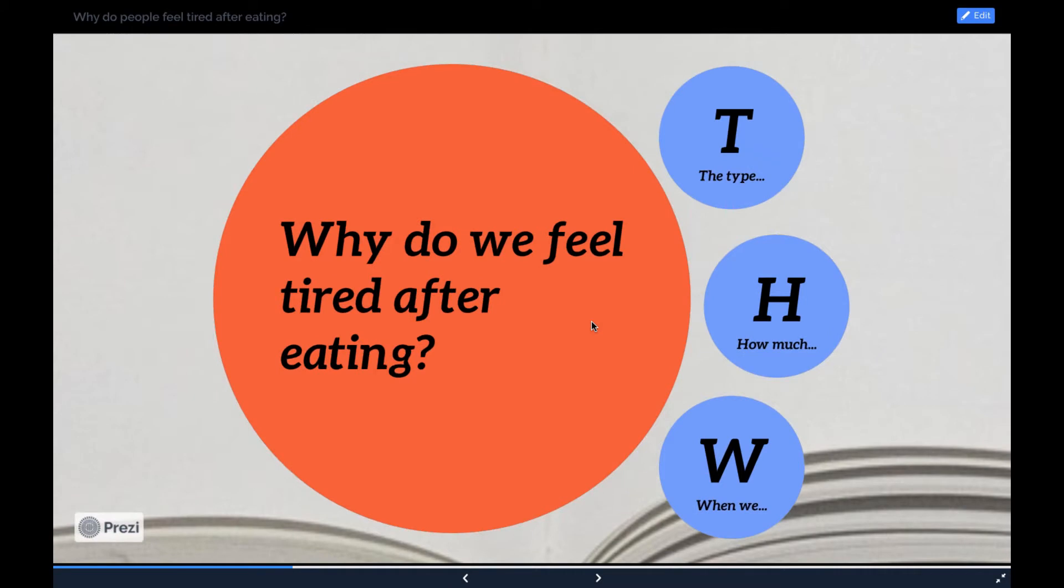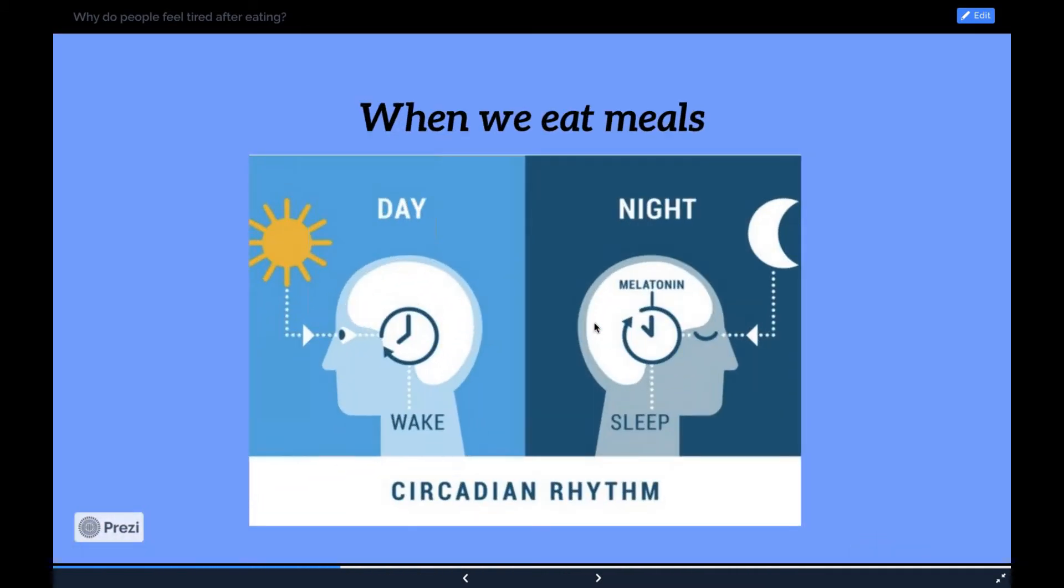Reason number three: when we eat meals, timing. A person's natural body clock or circadian rhythm can affect how they feel after eating. The Natural Sleep Foundation report that people naturally have a low in energy at 2 a.m. and again at 2 p.m. This may explain the tradition of taking a nap or siesta after the midday meal. Daylight and darkness are essential in regulating circadian rhythm, but the timing of meals may also have an effect.